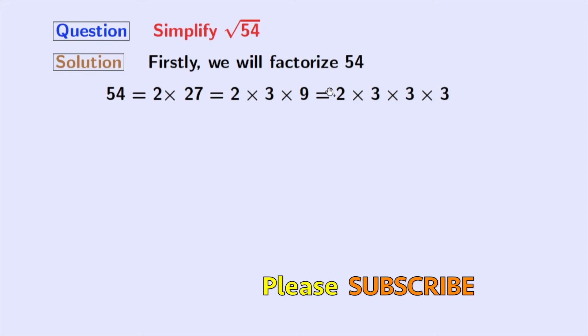Now, note that all these numbers are prime numbers. So we will not factorize further. Finally, we get 54 equal to 2 times 3 times 3 times 3.